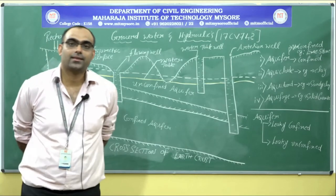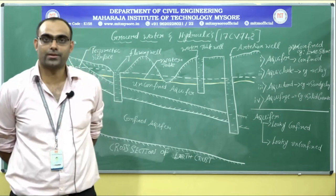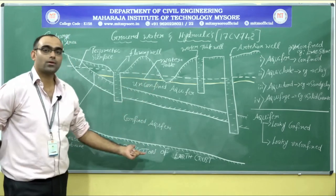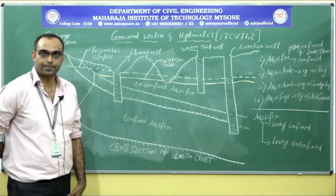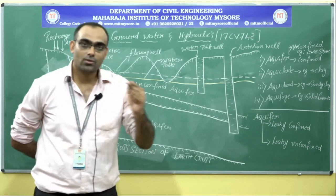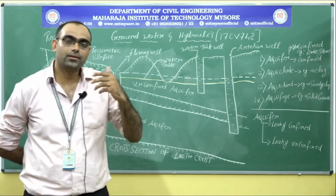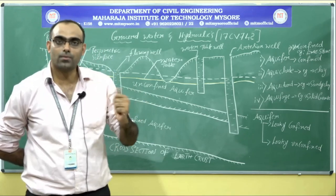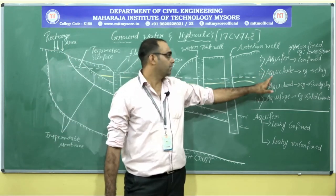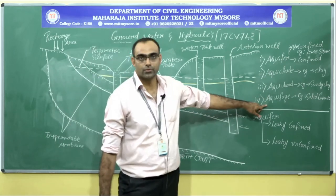The next topic is the occurrence of groundwater in different geological formations. Using a schematic cross-section of the earth's crust, the different geological formations we come across are: first, aquifer; second, aquiclude; third, aquitard; and fourth, aquifuge.